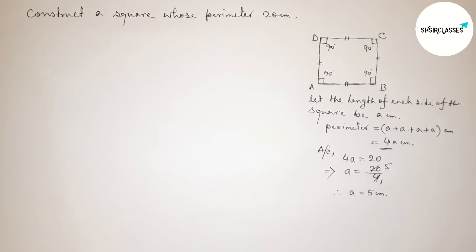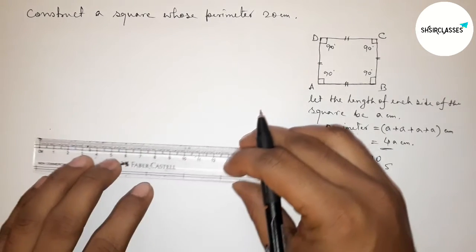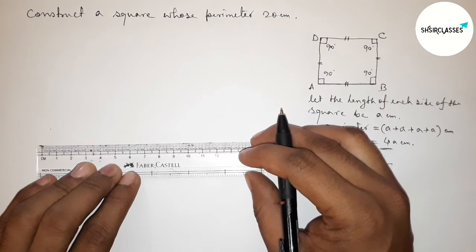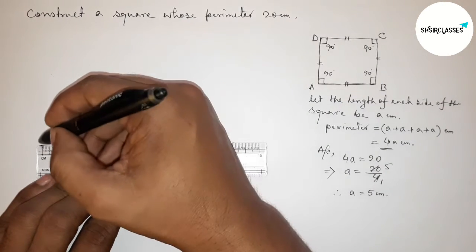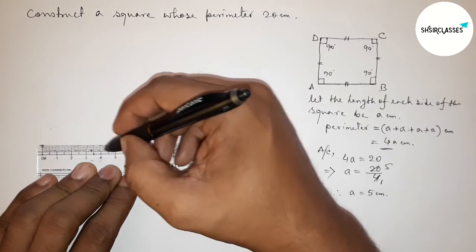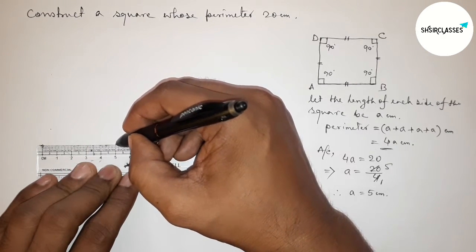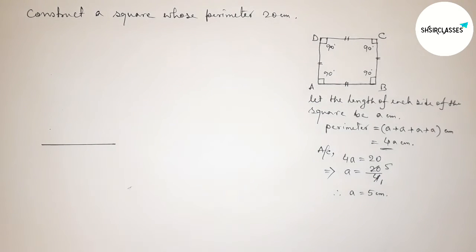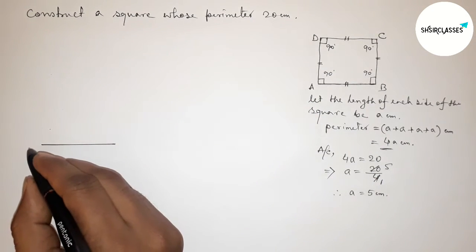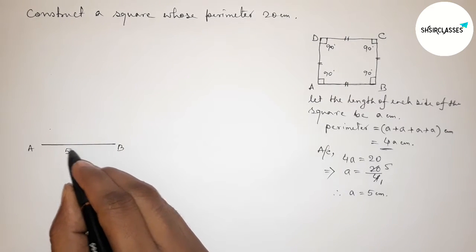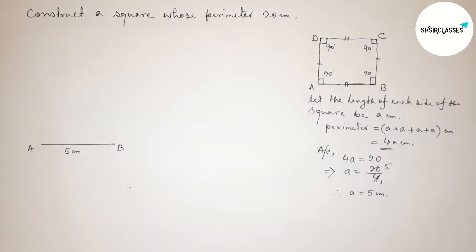Now we have to construct a square with each side 5 centimeters. First, drawing a line segment of length 5 centimeters — starting from 0: 1, 2, 3, 4, 5. This is a 5 centimeter line segment. Taking point A at the start and point B at the end.